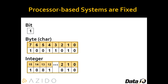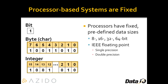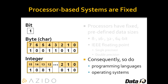Most applications are built around processor-based systems. Processor-based systems generally have a fixed architecture — for example, they might have an 8, 16, 32-bit, or 64-bit processing element. There are also standards for representing floating point numbers such as IEEE single and double precision floating point. But generally, processor-based systems have a fixed architecture, and consequently so do programming languages and operating systems based around them.